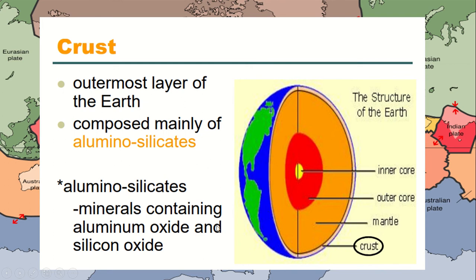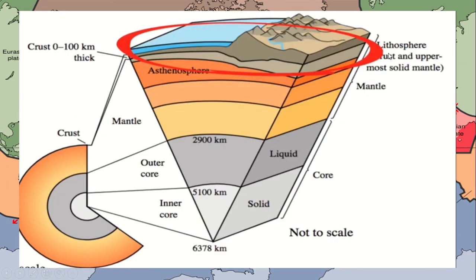We have the mantle, the outer core — the liquid part — and the inner core — the solid part. The lithosphere includes the crust and the uppermost solid mantle. Beneath that, we have the asthenosphere, then the core, the outer core, and the inner core.